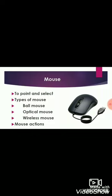The ball mouse has a rubber or metal ball under it. The third type of mouse is wireless mouse. A wireless mouse is not attached to the computer through a wire. This type of mouse uses signals to communicate with the computer, like the way you use a remote control for a television.